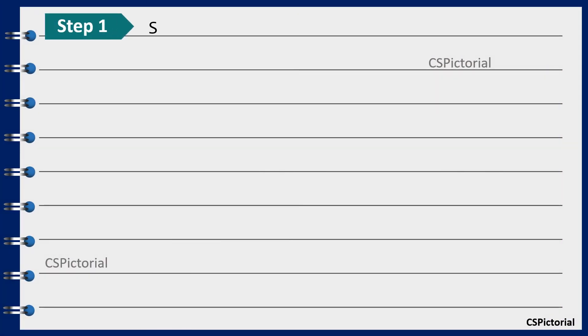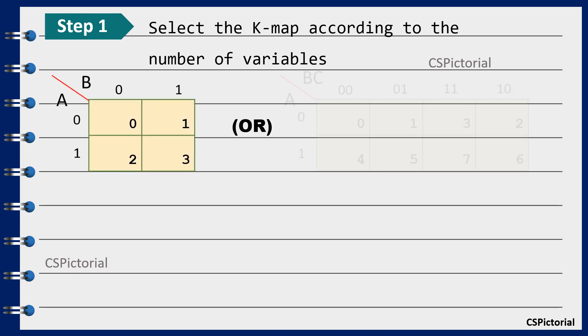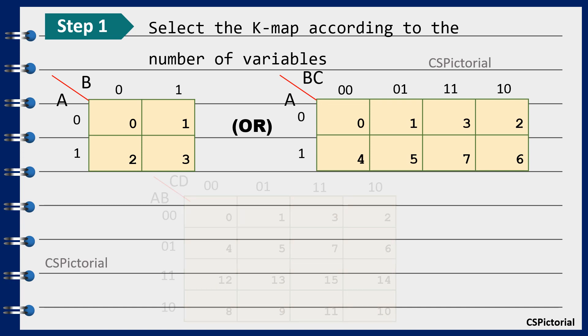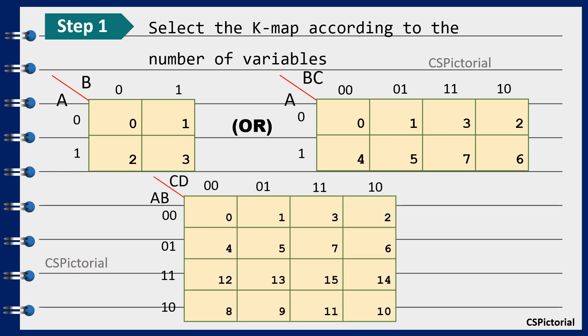The first step is to select the k-map according to the number of variables given in the Boolean expression or Boolean function. You can use a two variable k-map or a three variable k-map or a four variable k-map etc. according to the need.